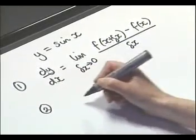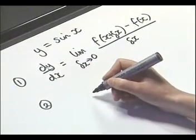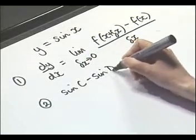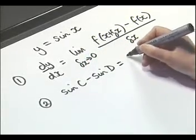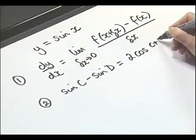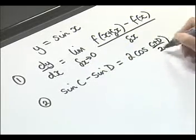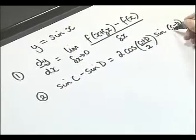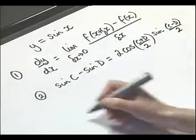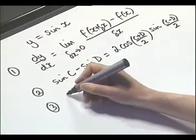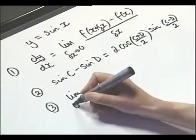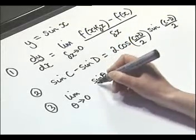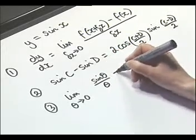The second is one of our trigonometric identities: sine c minus sine d equals twice the cosine of (c plus d) divided by 2, multiplied by the sine of (c minus d) divided by 2. And the third is the limit as theta approaches 0 that sine theta divided by theta equals 1.